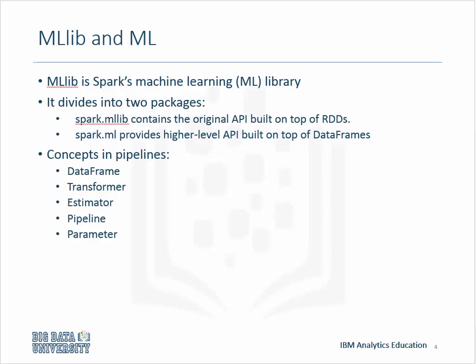MLLib is Spark's machine learning ML library. Its goal is to make practical machine learning scalable and easy. It consists of common learning algorithms and utilities, including classification, regression, clustering, collaborative filtering, dimensionality reduction, as well as lower level optimization primitives, and higher level pipeline APIs. It is divided into two packages: MLLib and ML.